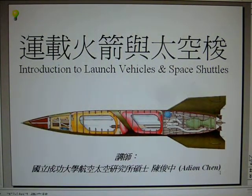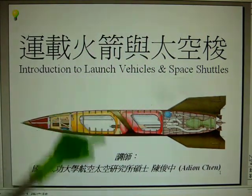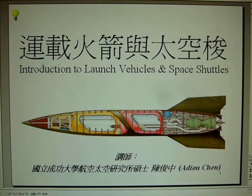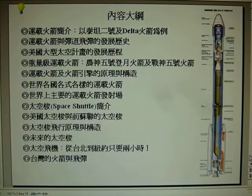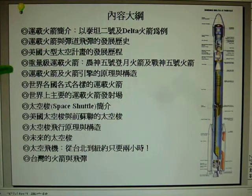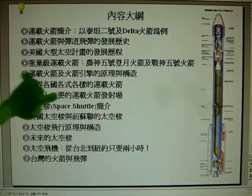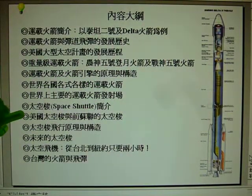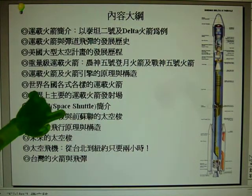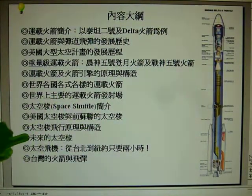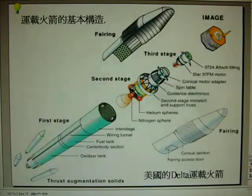The following is a brief summary of the science class: Introduction to Launch Vehicles and Space Shuttles. My name is Adrian Chen from Taipei, Taiwan. The contents of this class include launch vehicles and their structure, ballistic missiles, launch vehicles of all countries and their launch sites, and space shuttles — including the United States space shuttle, the Soviet Union space shuttle, future space shuttles, and space planes.